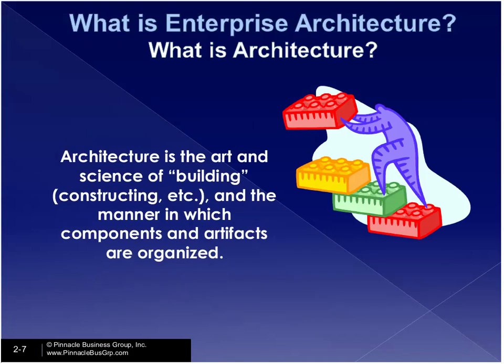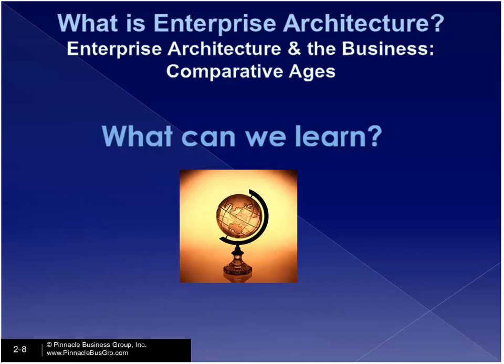The term architecture is the art and science of building something and the manner in which components and artifacts are organized. The science we can teach — E equals MC squared, F equals MA, I equals D over T. The art comes through practitioning — you're not going to get that through passing a multiple-choice exam. It really is essentially practitioning, and that's one of the hallmarks of our approach.